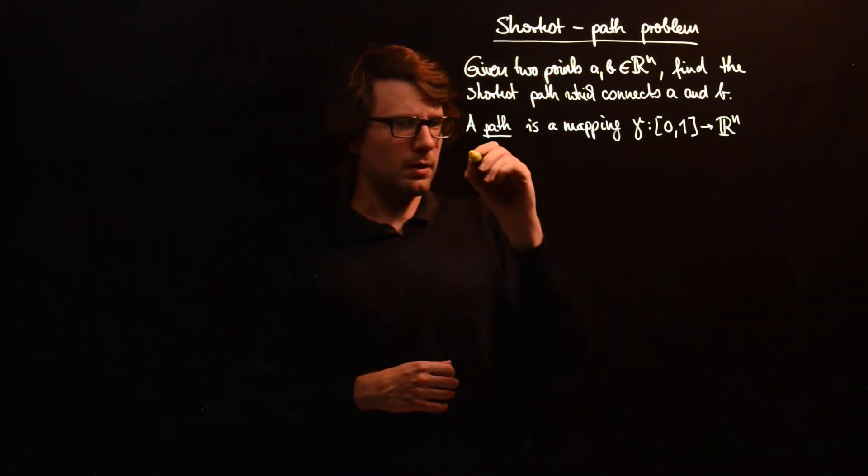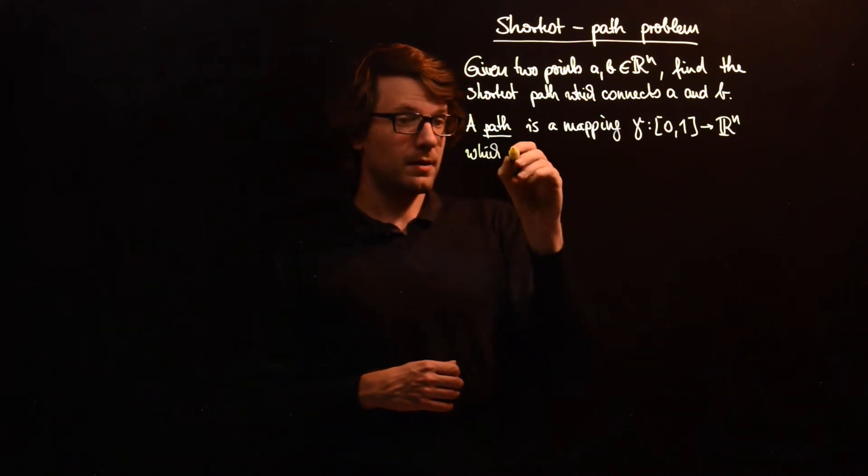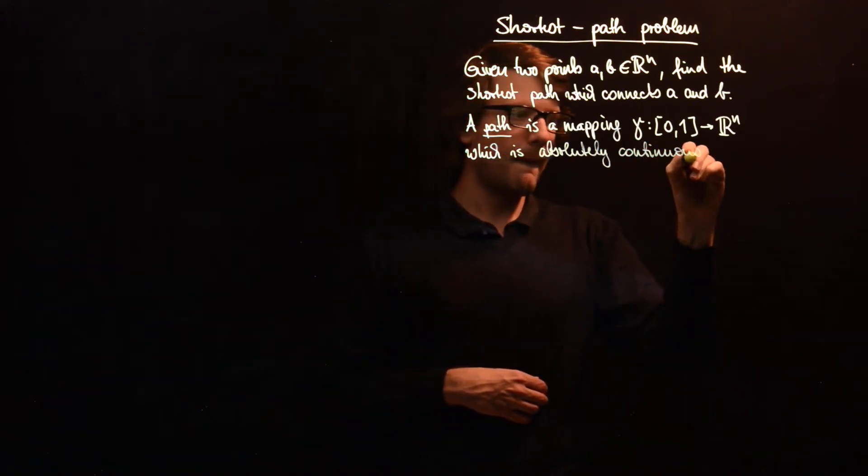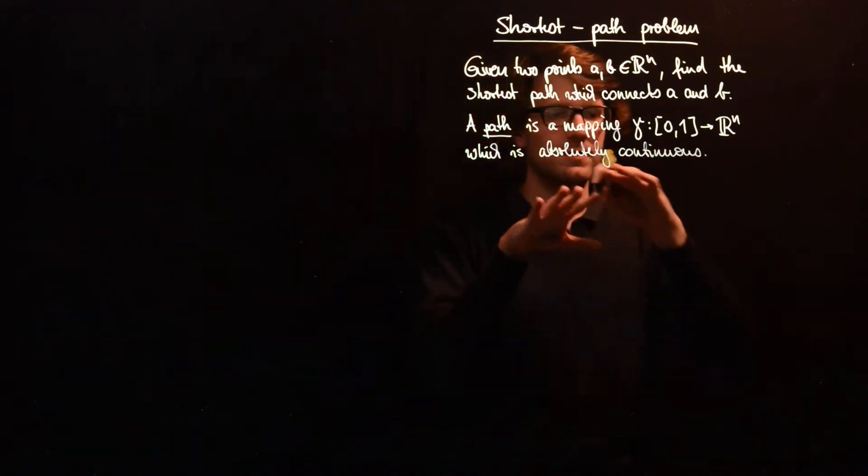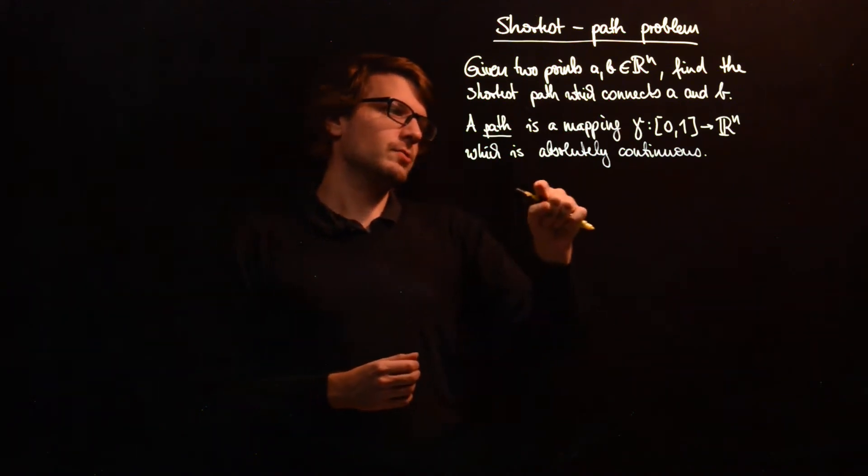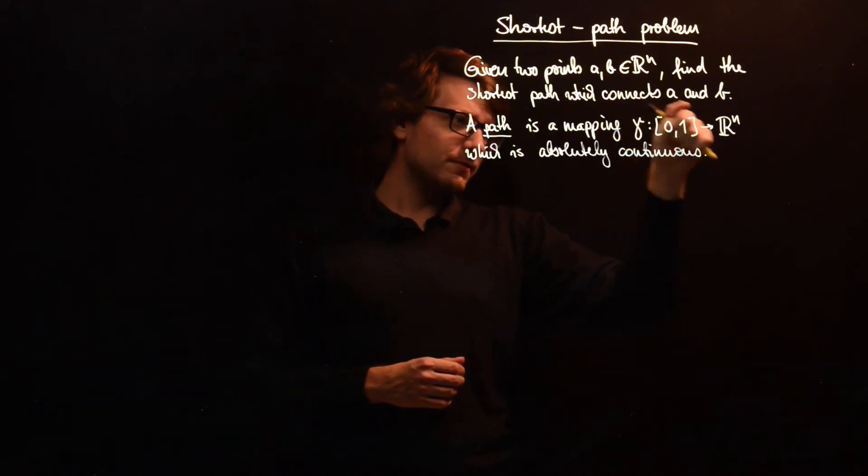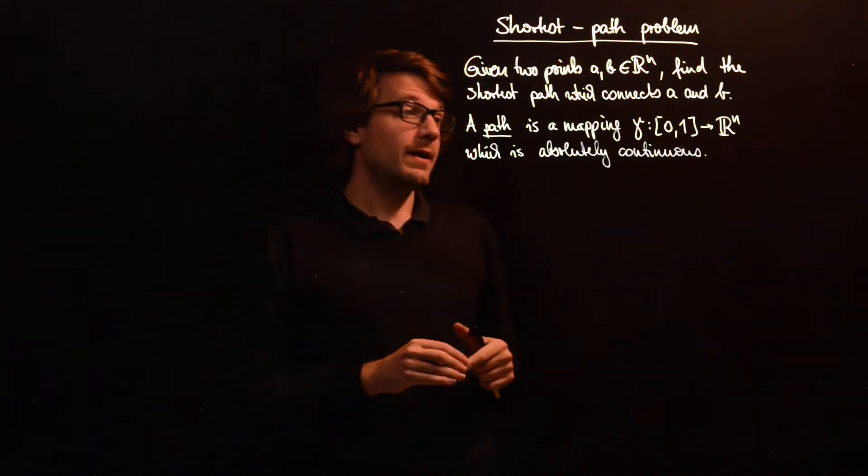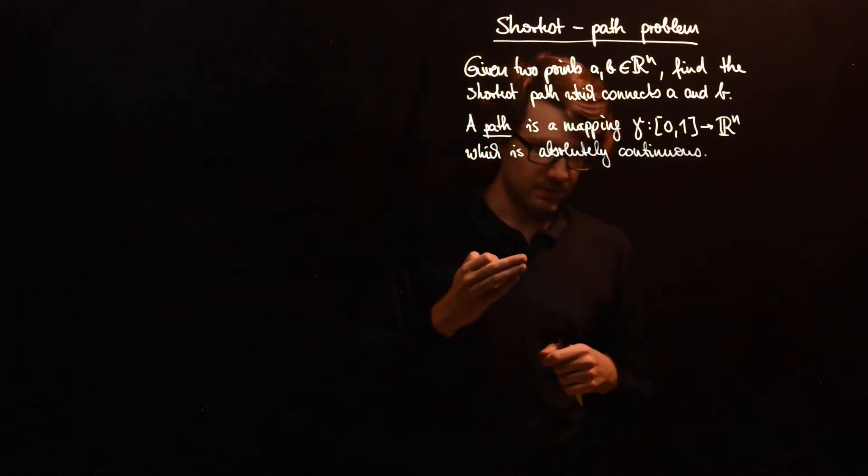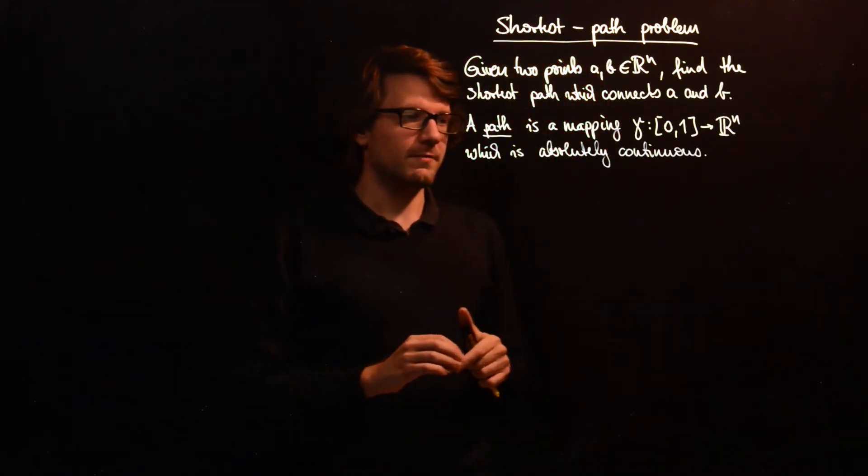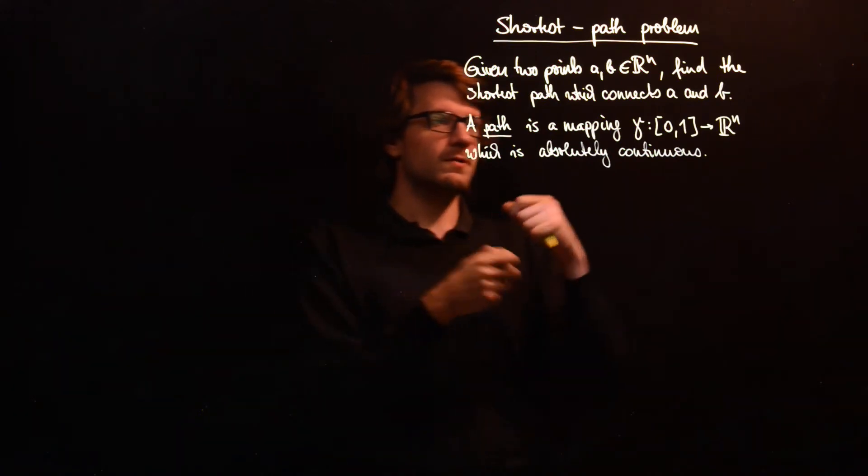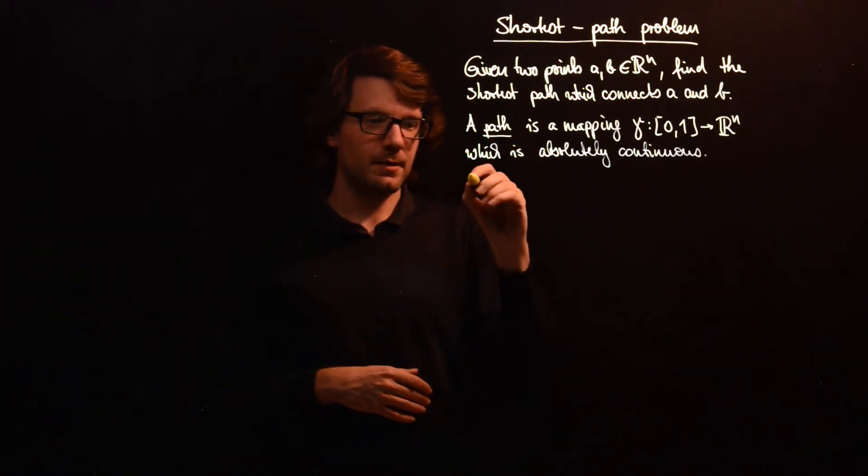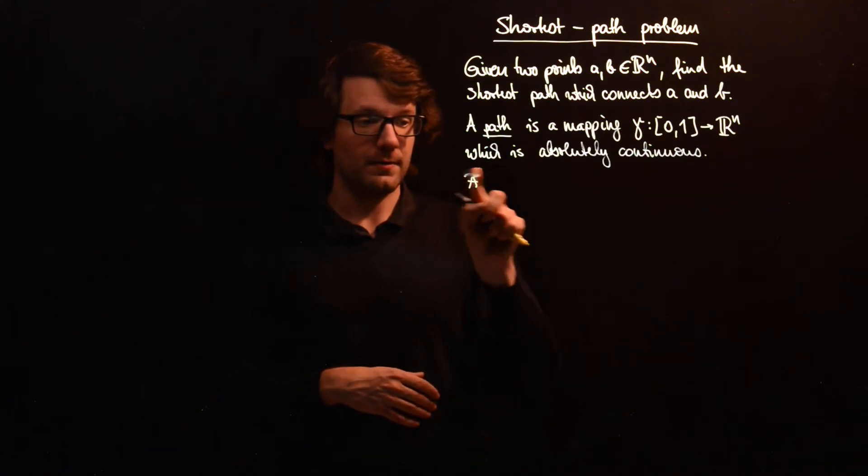And we require that this path should be absolutely continuous, and it doesn't really matter if you really know what this exactly means. The point is that it ensures that the first derivative of this exists almost everywhere, and if you integrate over the first derivative, then you get back gamma. So gamma is the integral over the gamma dot, the first derivative with respect to gamma. And we will need this because the first derivative will appear in the optimization problem, namely when we define the word shortest.